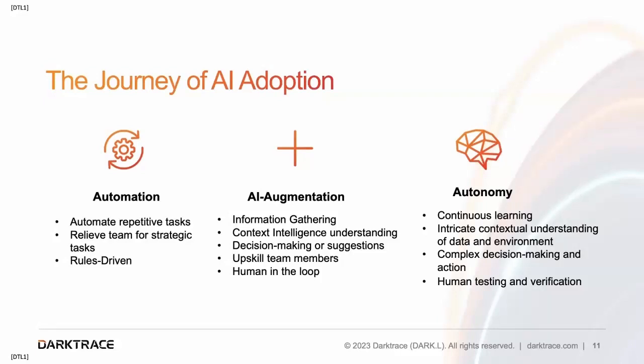Then we move on to autonomy, where AI can continuously learn and develop intricate contextual understanding of the data in your environment, providing complex decision-making skills and moving on to autonomous action. Here, the human is out of the loop but still heavily involved in the process — specifically with input and data integrity, as well as testing, verification, validation, and most importantly, control, post-processing, and workflow optimization, ensuring that the AI would do the same thing that a human would do in that case.